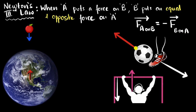We can also write this in the form of an equation: the force that A puts on B will always be equal and opposite to the force that B puts on A. You put a force on that ball, the ball puts an equal but opposite force back on your foot. You pull down on the bar, the bar will pull up on you with an equal and opposite force. Whatever force the Earth puts on the apple, the apple will put an equal but opposite force back on Earth.